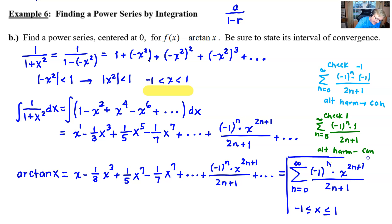And what that means is that our interval of convergence is actually going to run from negative one to one and include those values as well. And so here we have the integration approach to developing the arc tangent.